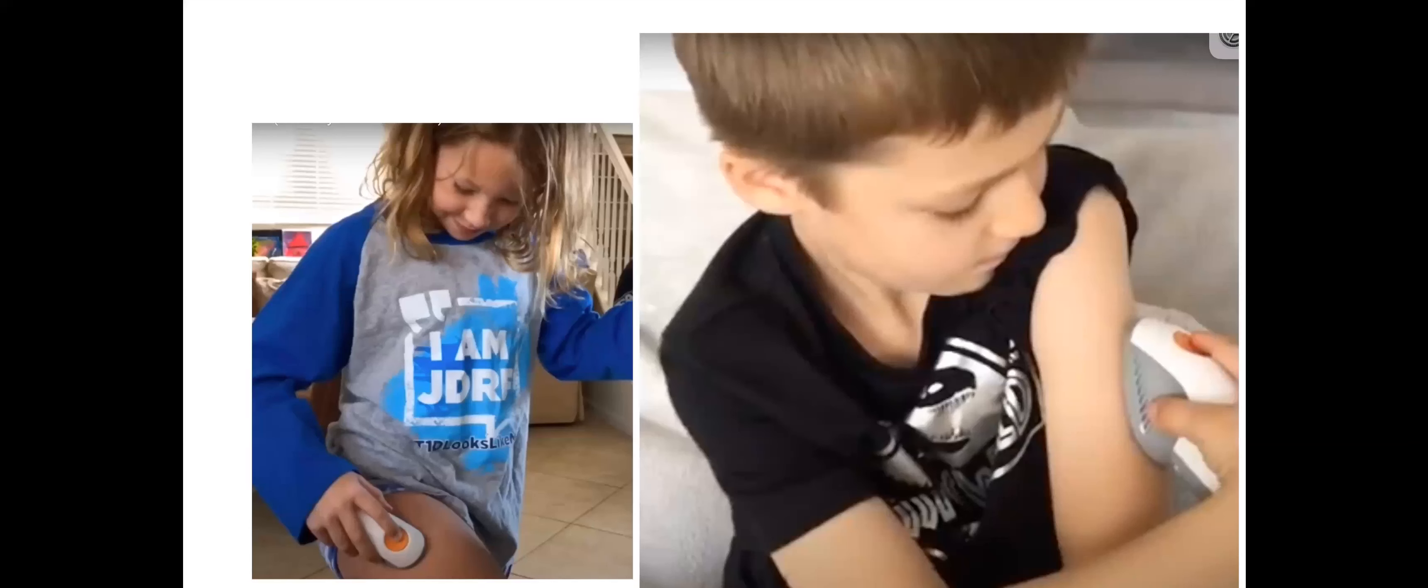And there are videos of young children on YouTube. These are images from YouTube videos doing their own insertion. And it can be really empowering to be able to do this yourself when you have type one diabetes. Oftentimes you feel like people are constantly intervening in your body and you constantly have to check in with others. And so the ability for users, in this case children, to be able to do more things for themselves becomes a really empowering experience in independence.